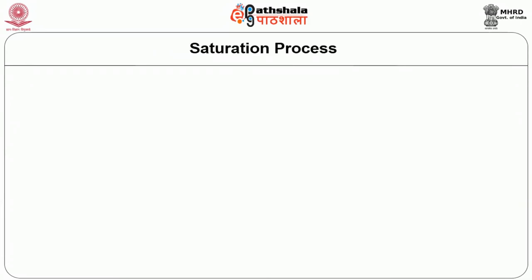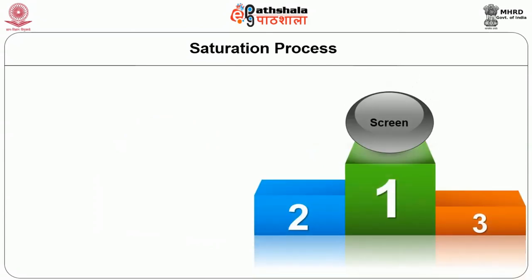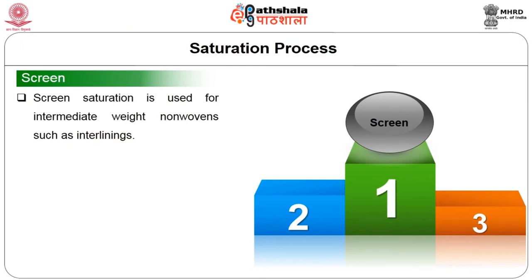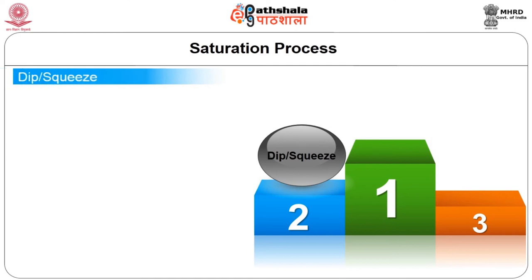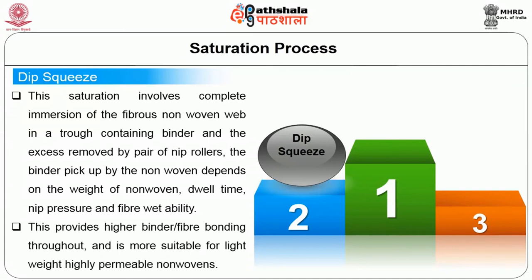Saturation bonding can be carried out in three ways: screen saturation, dip-squeeze, and size press. Screen saturation is used for intermediate weight non-wovens such as interlinings. Dip-squeeze saturation involves complete immersion of the fibrous non-woven web in a trough containing binder, with excess removal by a pair of nip rollers. The binder pickup depends on the weight of the non-woven, the dwell time, the nip pressure, and fiber wettability. This method provides higher binder-to-fiber bonding throughout and is more suitable for lightweight, highly permeable non-wovens. Size press saturation is used in high-speed processes such as wet-laid non-wovens.